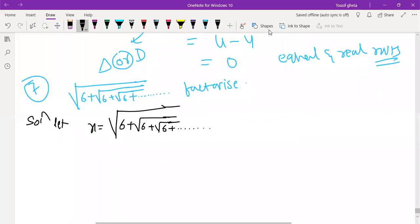What we will do? This is nothing but x. This is the full part. This is nothing but x, right? I can write here, x is equal to root 6 and this is nothing but root 6 plus root 6 plus root 6 plus root 6 like that.